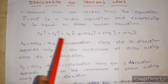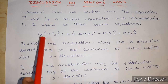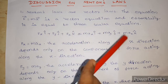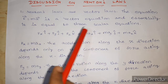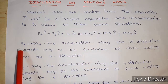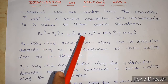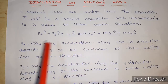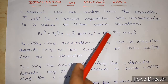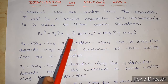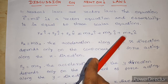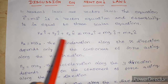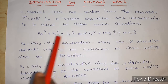If we equate the left hand side and right hand side, we get three scalar equations: Fx equal to mAx, Fy equal to mAy, and Fz equal to mAz.